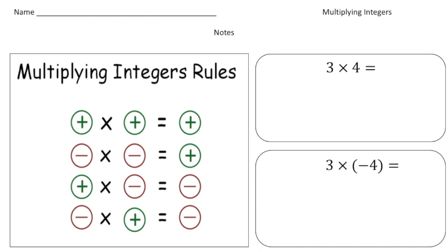All right, so here's the good news — the rules for multiplying integers are pretty easy. If you look at this chart over here, it really shows it all. Any time you're multiplying two integers with the same sign — for example, a positive times a positive — the result is always a positive. So a positive times a positive is a positive.